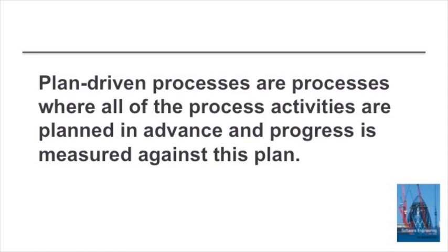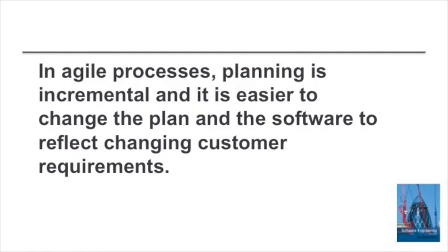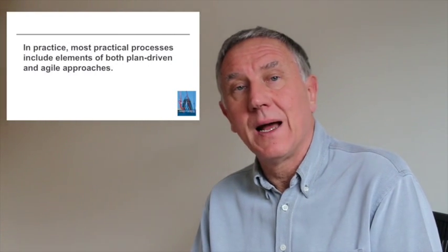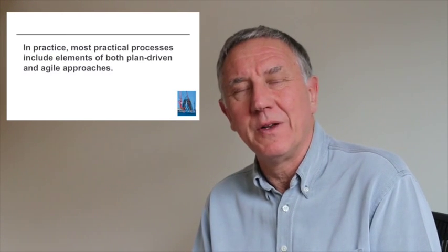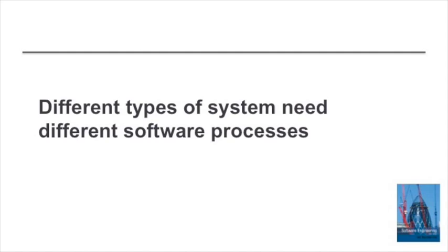Plan-based or plan-driven processes are processes where all of the activities in a process are specified in advance — a project plan is created and progress is measured against this plan. Agile processes don't have a detailed project plan; rather, they develop the software in a series of increments, with the functionality of each increment dependent on overall progress in the development. It's easier in an agile process to change the software if the requirements change, simply because everything is not fixed and static at the beginning. In practice, most software is developed according to a mix of plan-driven and agile processes.